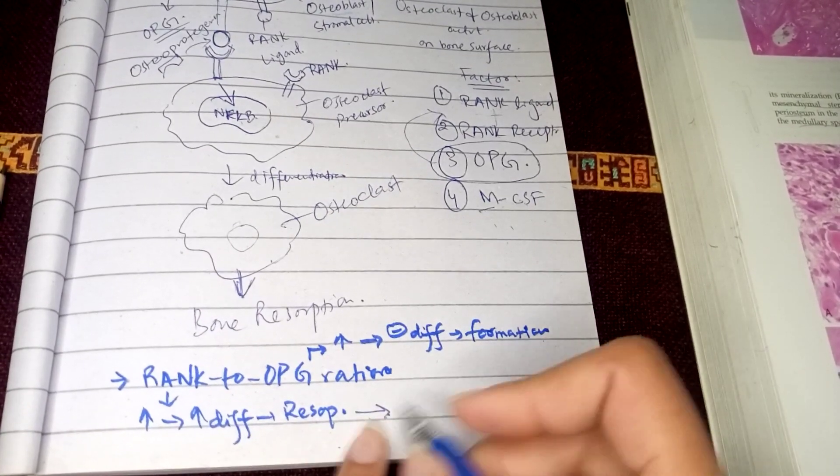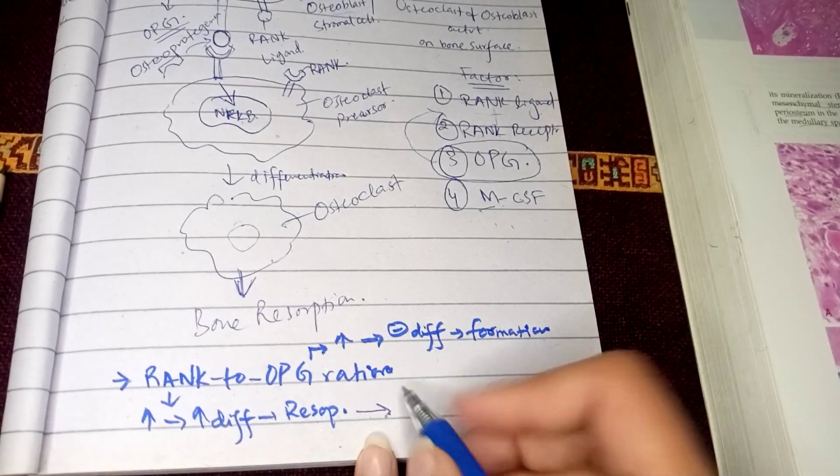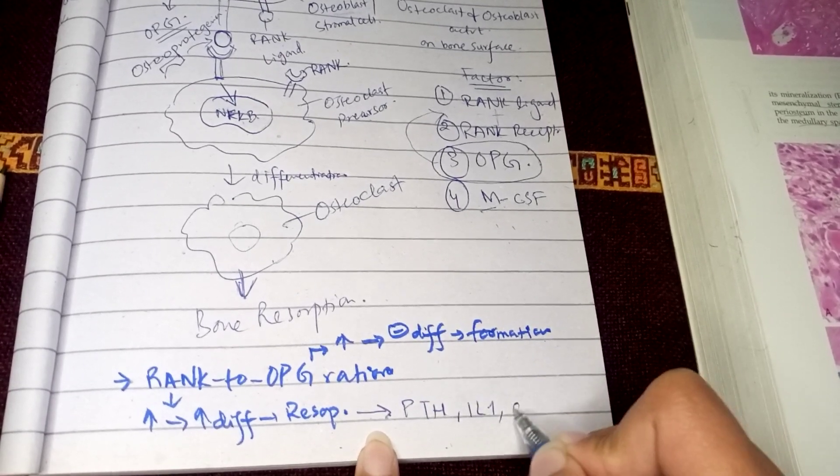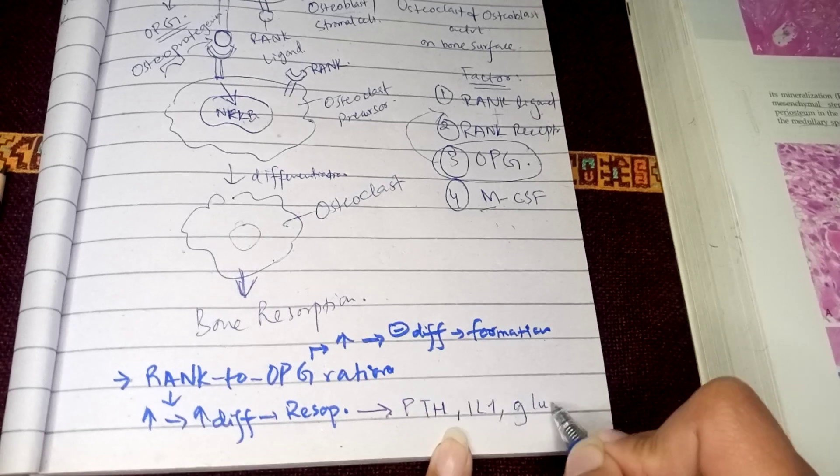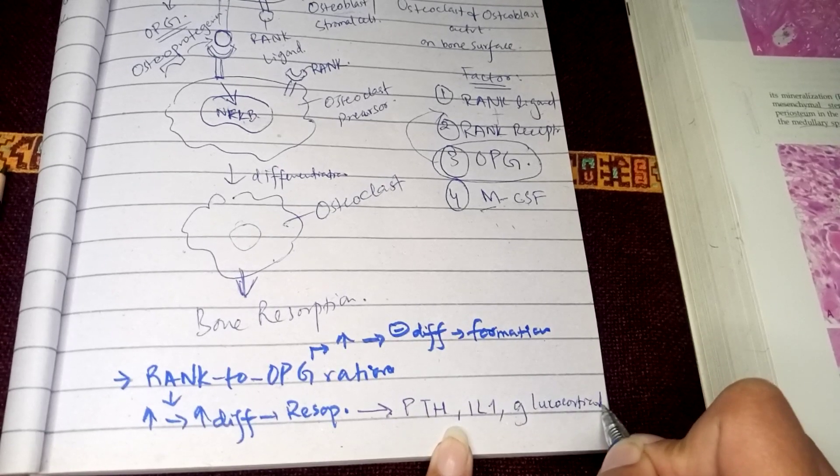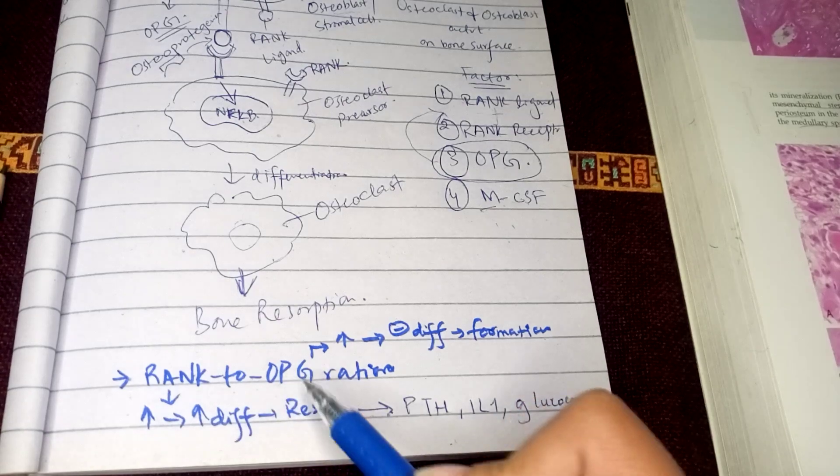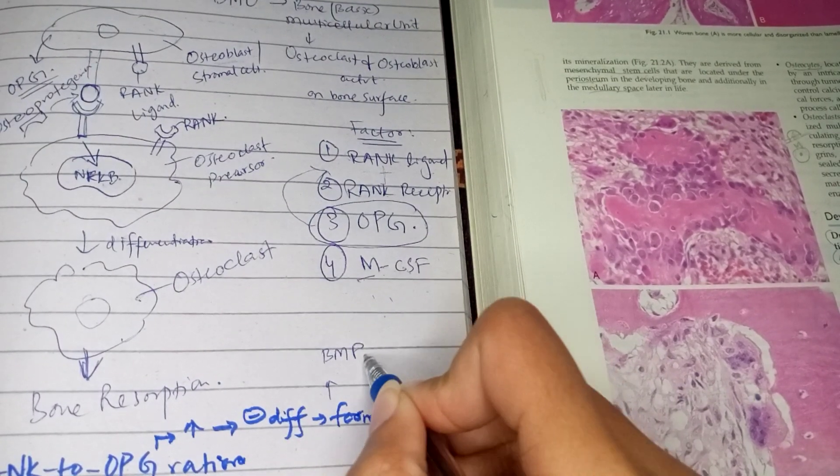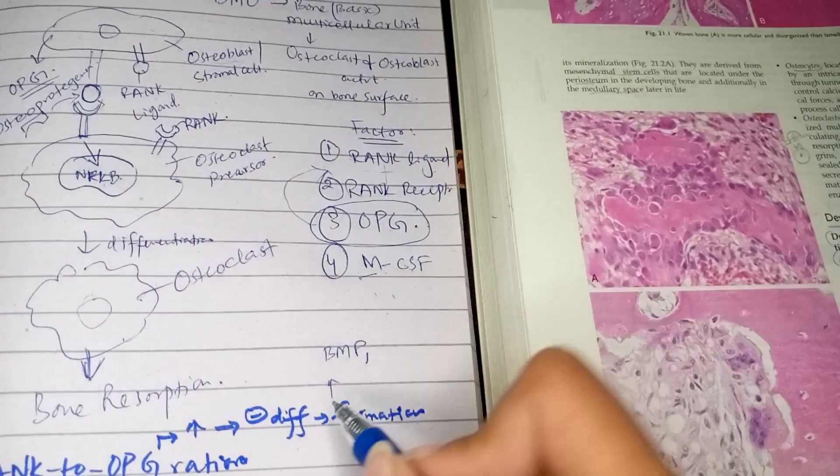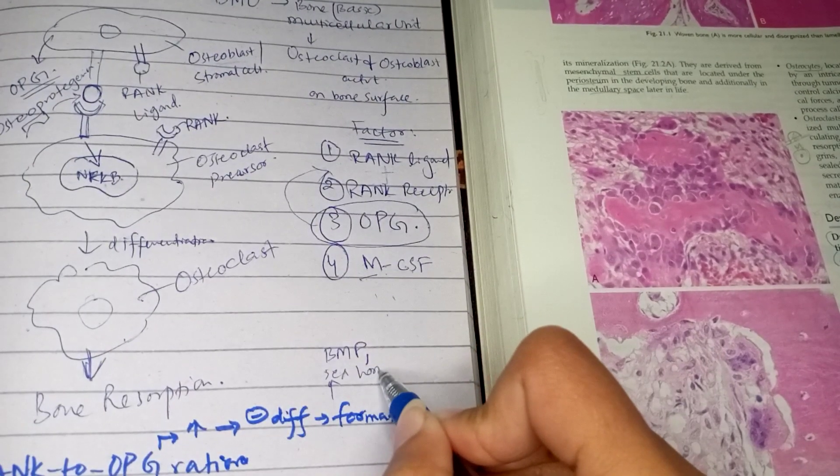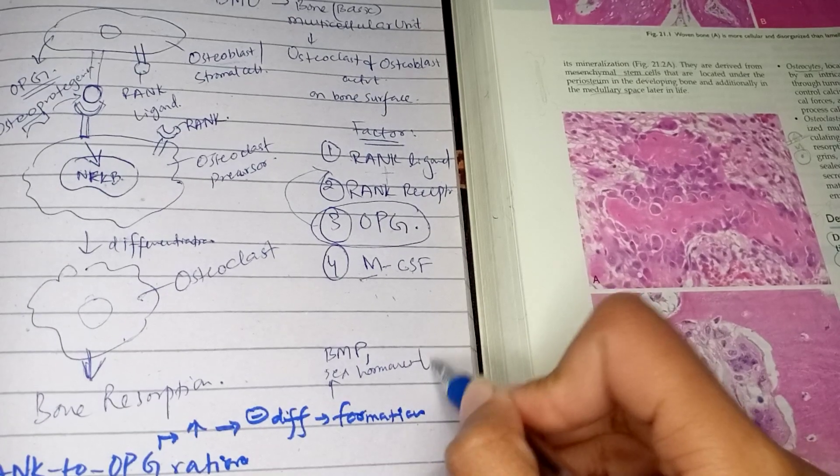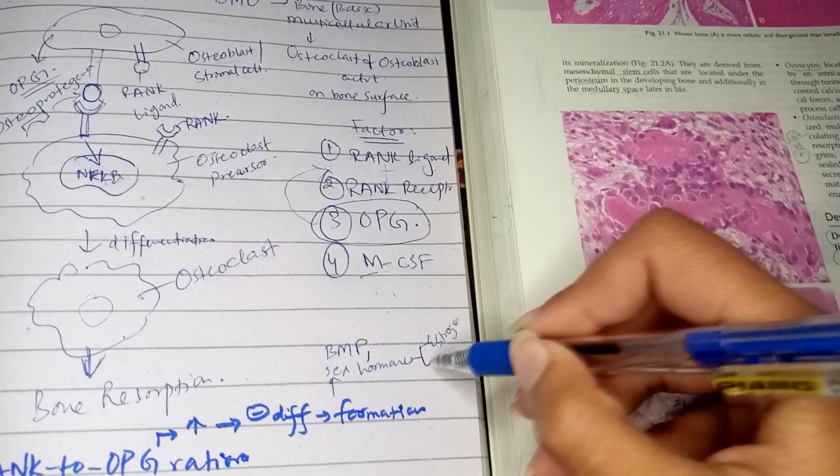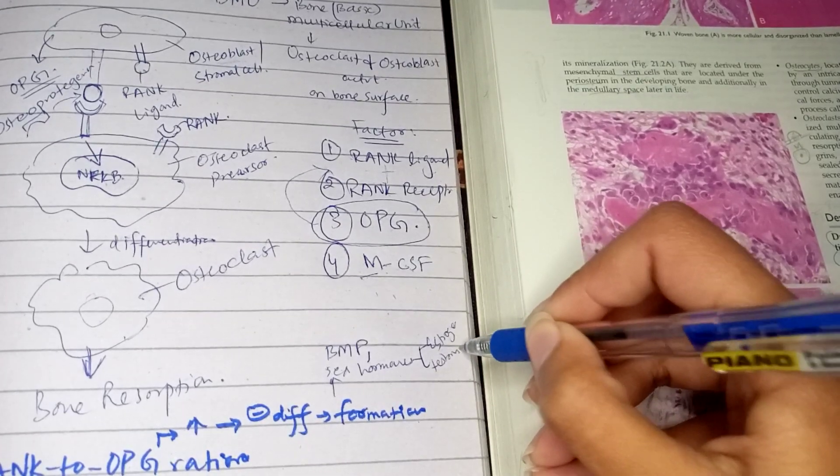Factors increasing rank include PTH (parathyroid hormone), interleukin 1, and glucocorticoids. Factors increasing OPG include BMP and sex hormones, which includes estrogen and testosterone.